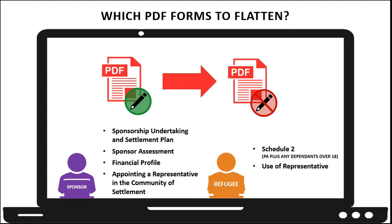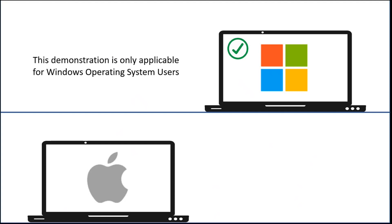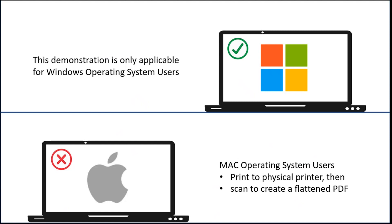Now let's see what you'll need for creating a flattened version of the fillable form. It is important to point out that this demonstration is for those who are using Windows operating systems. People who use Mac computers are not currently able to flatten a fillable form in the same way. Mac users can, however, print to a physical printer and then scan the printed page back to a PDF, which will create a flattened version of the PDF form.